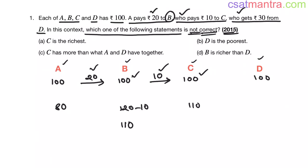Now, who gets 30 rupees from D? We are talking about C. C gets 30 rupees from D. Now, D will be having 70 rupees and C will be having 110 plus 30 rupees, that is 140. So the final amount each of them having is 80 rupees, 110, 140 and 70.